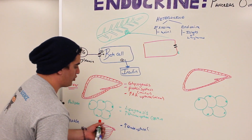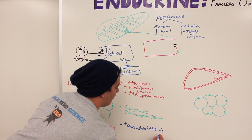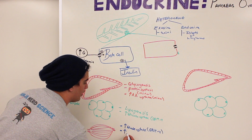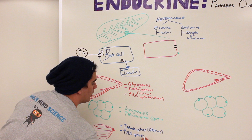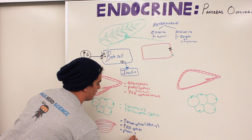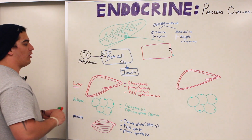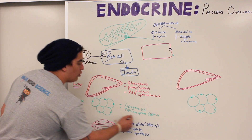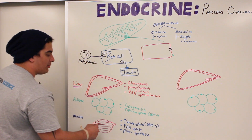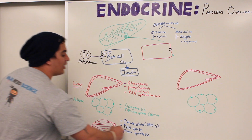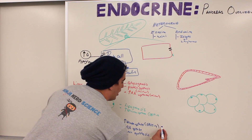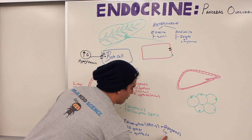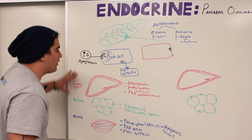In muscle, insulin increases glucose uptake via GLUT4 transporters, increases amino acid uptake, and promotes protein synthesis. It also promotes glycogenesis in muscle, though to a minor effect, because not as much glycogen is stored in the muscles compared to the liver. So those are the functions of insulin in a nutshell.